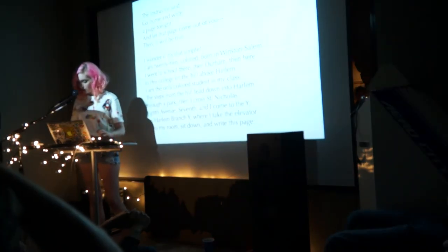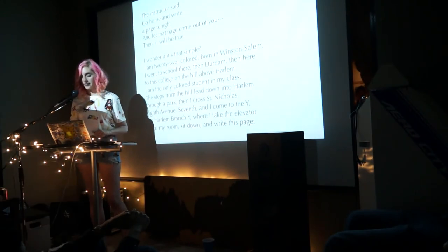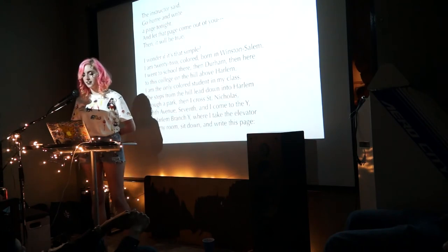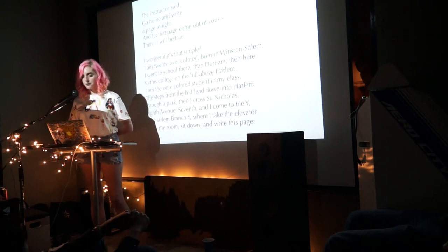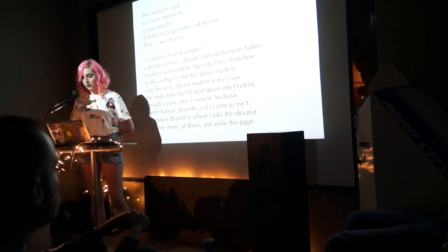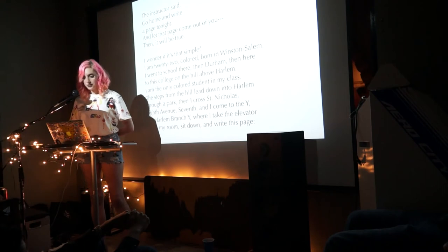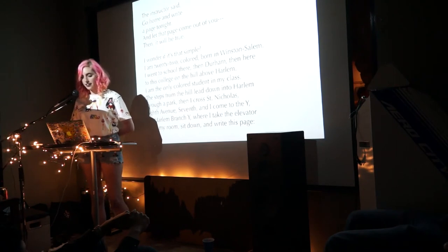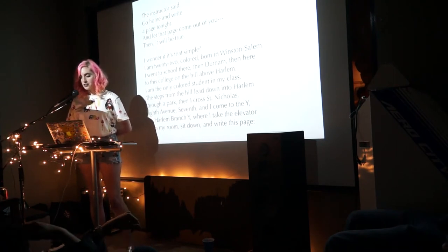This poem is called "Theme for English B." The instructor said: go home and write a page tonight, and let that page come out of you — then it will be true. I wonder if it's that simple. I am 22, colored, born in Winston-Salem. I went to school there, then Durham, then here to this college on the hill above Harlem. I am the only colored student in my class. The steps from the hill lead down into Harlem through a park, then I cross St. Nicholas, 8th Avenue, 7th, and I come to the Y — the Harlem Branch Y — where I take the elevator up to my room, sit down, and write this page.